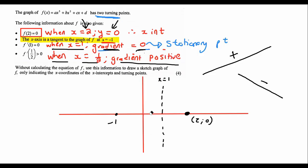So that means the graph is doing something like that, which then means that the turning point must be somewhere up at the top here when x is 1.